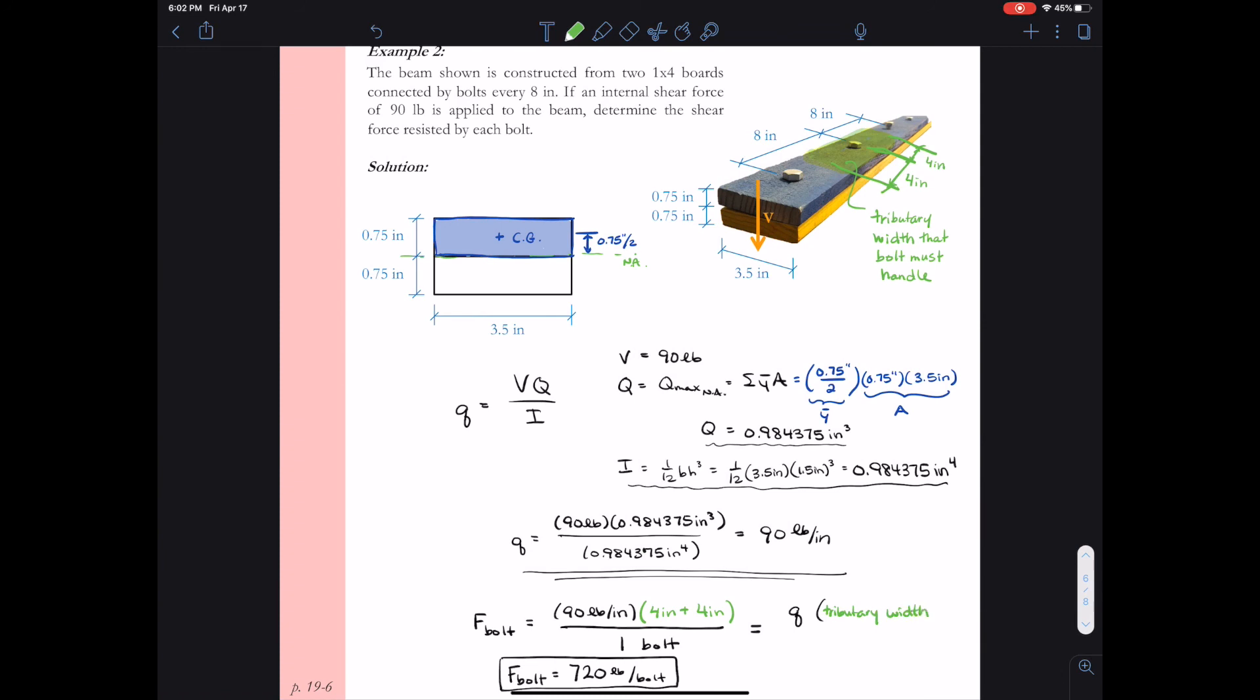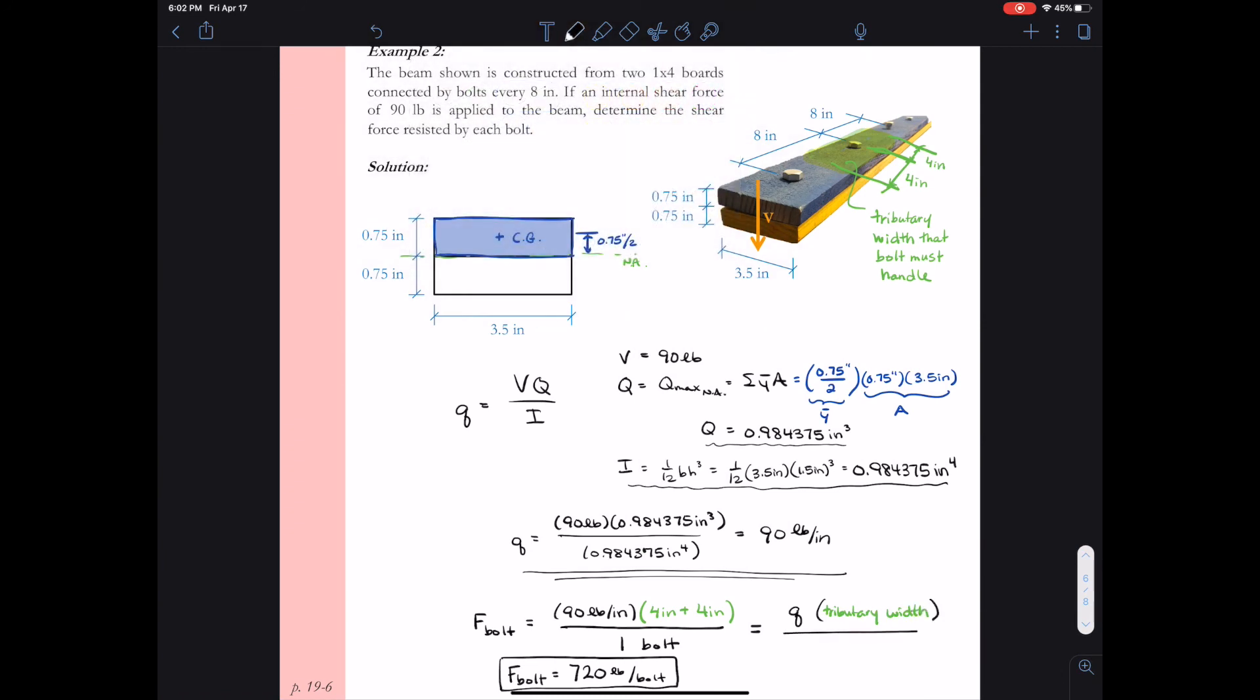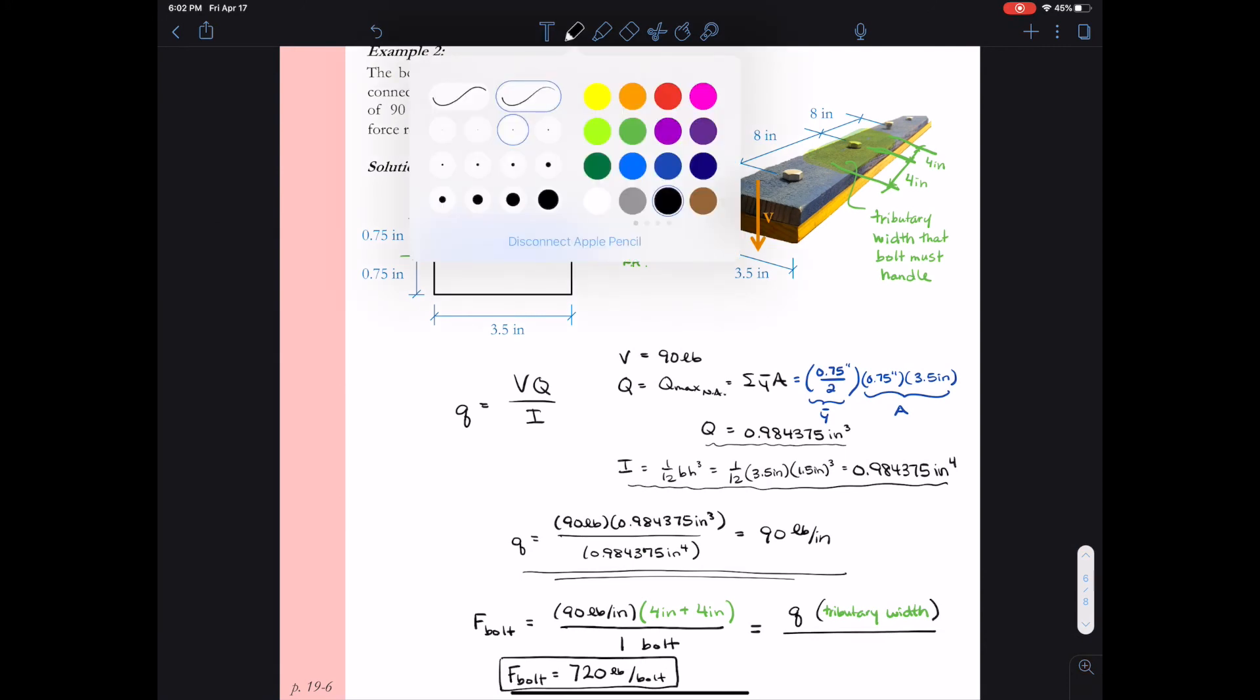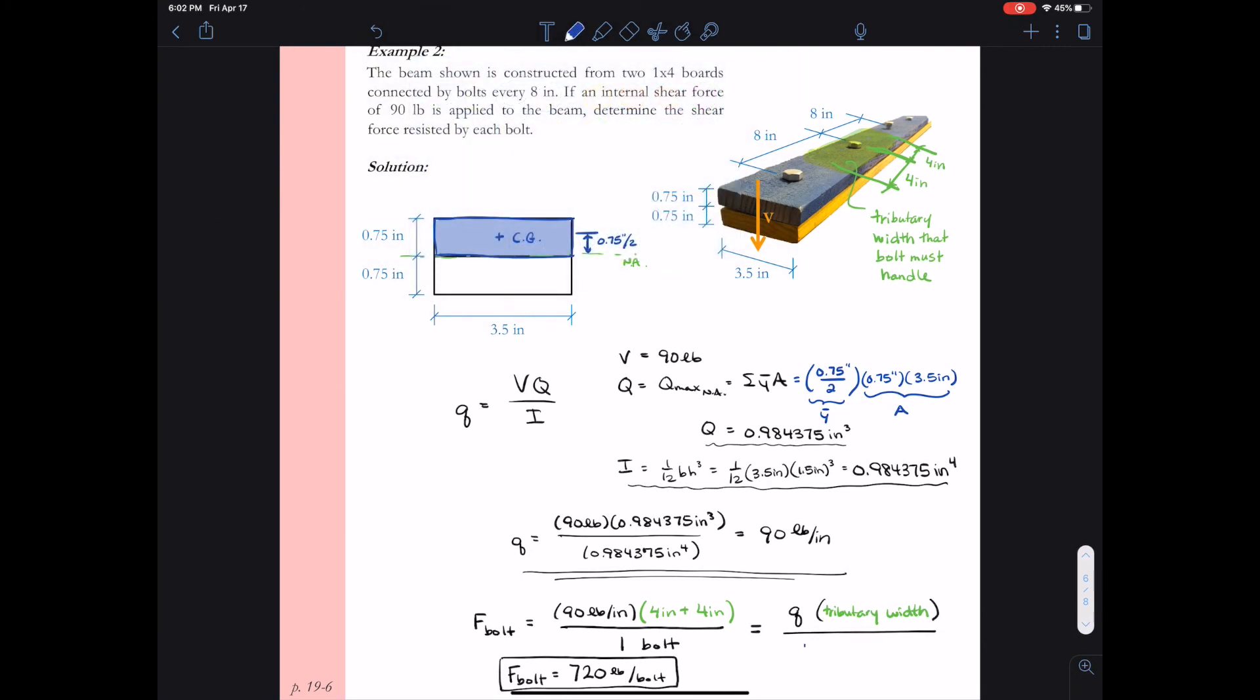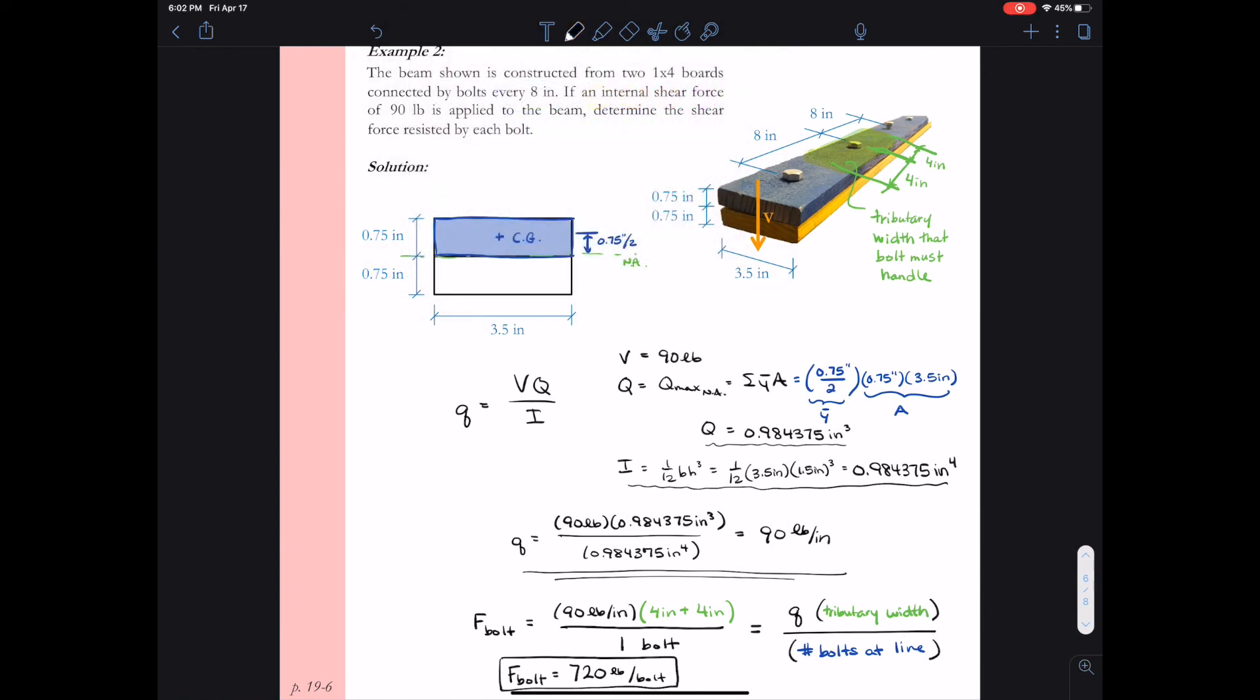So just rewriting the expression we have that F bolt was little q times the tributary width divided by the number of bolts at that line. So I wanted to rewrite this equation because we'll see in future example problems and homework problems that we look at and maybe real life engineering problems. You'll need to come up with this expression so it's important that we know how to do it if we have multiple bolts at that line or different tributary widths.